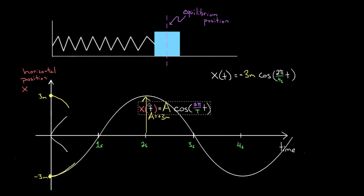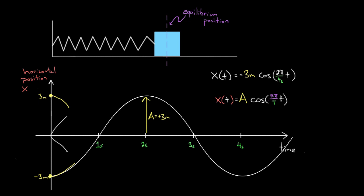To recap: the equation for simple harmonic motion is plus or minus the amplitude, times either sine or cosine of (2π/T) times t. The factor 2π/T represents the angular frequency or angular velocity. Use positive cosine if starting at a maximum, negative cosine if starting at a minimum, positive sine if starting at equilibrium going up, and negative sine if starting at equilibrium going down.